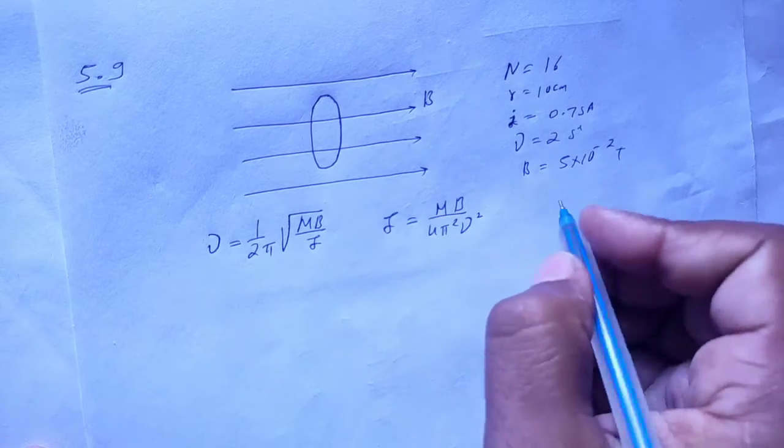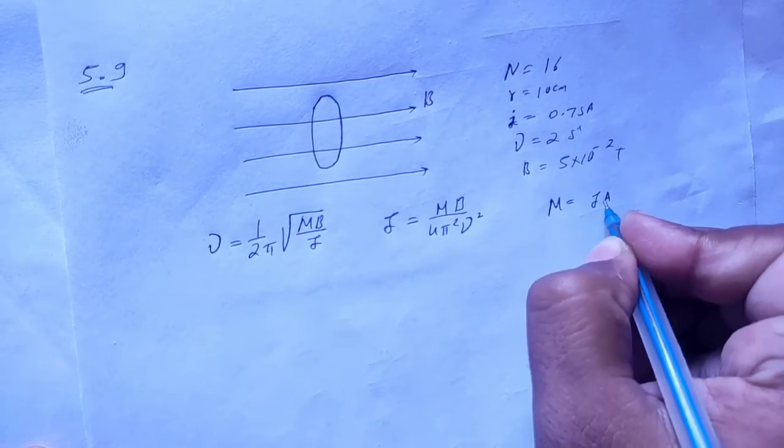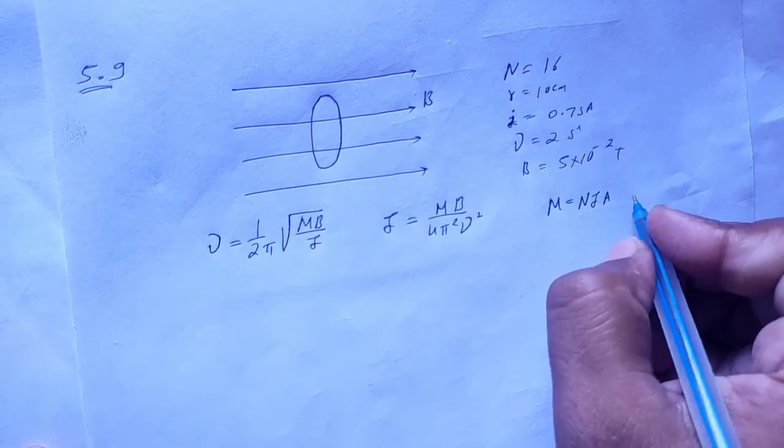Now I have b, pi, and frequency. So if I find m, how much is it? i into a, right. The magnetic moment will be n i a.